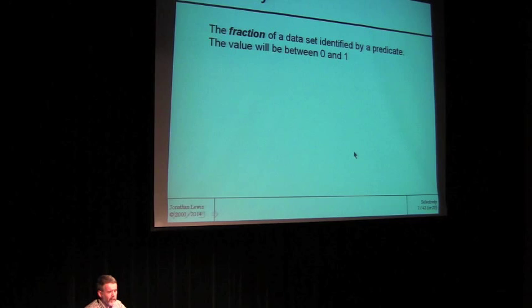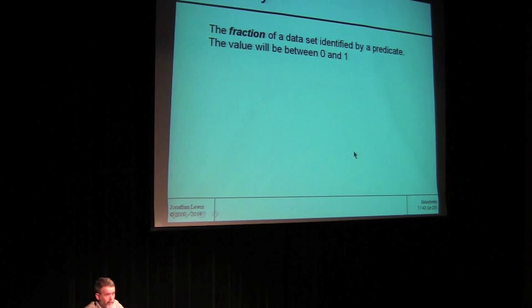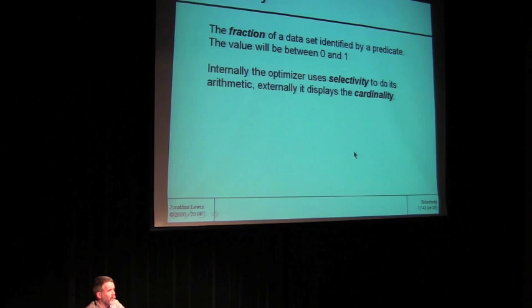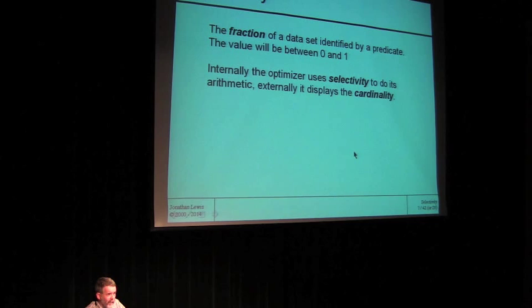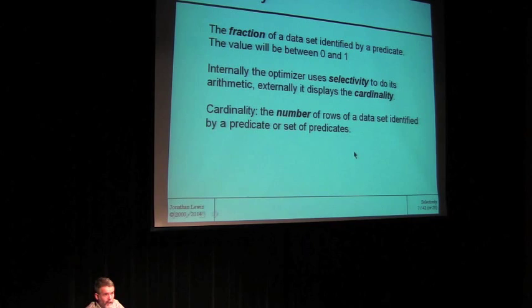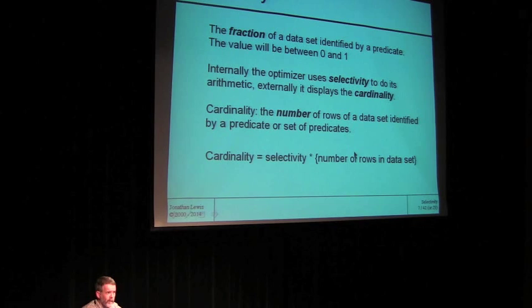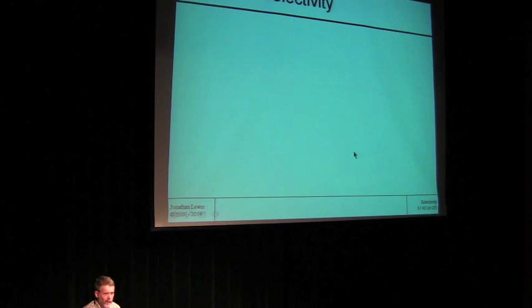OK, so let's start the presentation. Selectivity is the fraction of a data set that's going to be identified by some predicate. As a fraction, the value is going to be between 0 and 1. From our perspective — the human viewpoint — what we see is not the selectivity directly but the cardinality: how many rows out of the data set will be returned? Oracle is doing its arithmetic basically on selectivity, what fraction, but for our consumption it turns that into volume. Cardinality is simply the selectivity multiplied by the number of rows of the incoming data set.